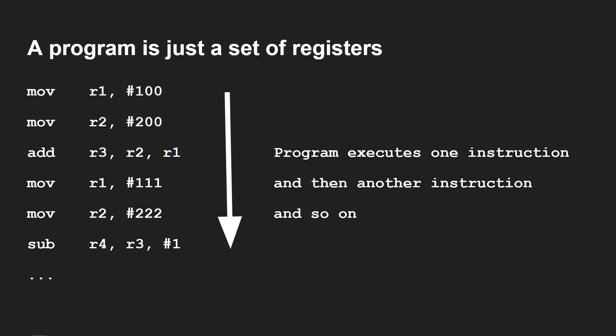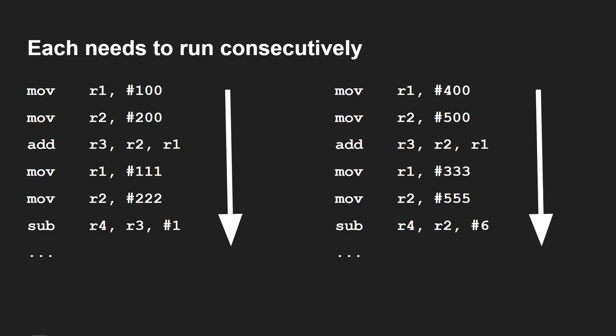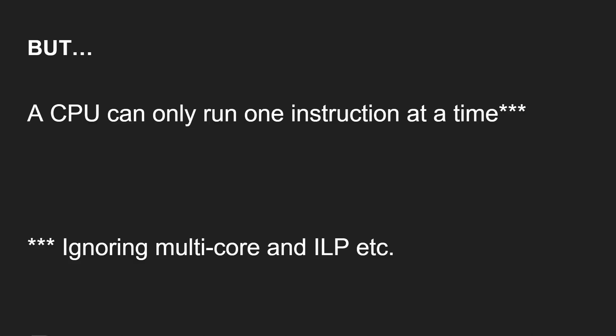When you've used a compiler to write a C program, it compiles that into assembly and ultimately into machine code that is used by the processor to run these instructions. Now let's say you wanted to run two programs concurrently. On the left we have some assembly language, on the right we have some assembly language — very similar but actually different. For example, on the first line we're loading 100 into R1 on the program on the left, but we're loading 400 into R1 on the program on the right. So how can you get the CPU to run both of these programs concurrently? The problem is that a CPU can only run one instruction at a time — ignoring multi-cores and instruction-level parallelism, fundamentally a CPU executes one instruction, then moves on to the next.